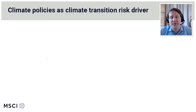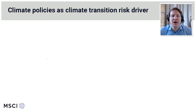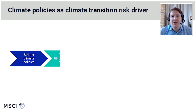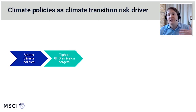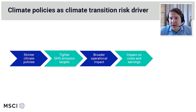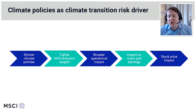Turning to Bruno: what are the economic drivers of climate change and what transmission channels have you identified? We looked at two types of economic drivers and transmission channels. The first one is climate policies. Nearly everywhere in the world, governments are implementing stricter climate policies, which has an impact on companies operating in the economy. That transmission channel starts with stricter climate policies leading to tighter greenhouse gas emission targets, which then has a broader operational impact on companies, eventually materializing in costs and earnings, and ultimately impacting stock prices through the earnings channel.